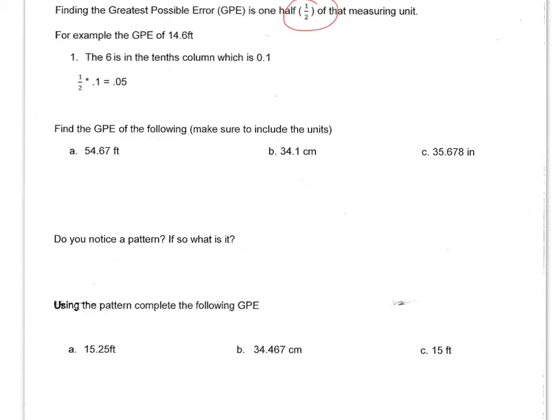For example, the greatest possible error of 14.6 feet. If you take a look at this problem here, the 6, the last digit, is in the tenths place, which we write as 0.1. So what we do is one half times 0.1, and the greatest possible error would be 0.05.